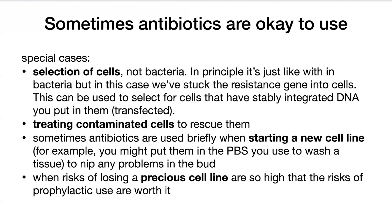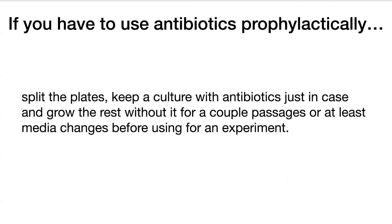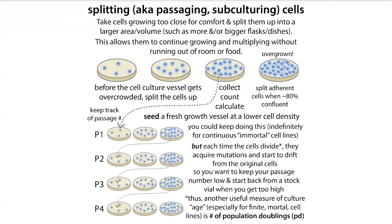Sometimes you do use antibiotics prophylactically when the risks of losing a precious cell line are so high that the risks of prophylactic use are worth it. If you do have to use antibiotics prophylactically, what's best is to split the plate — take the cells that are overgrowing and split them onto multiple plates, diluting them. We call that splitting or passaging.